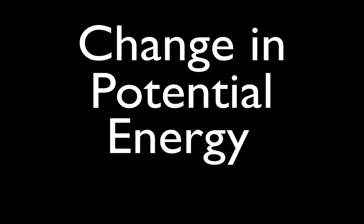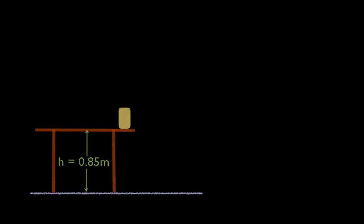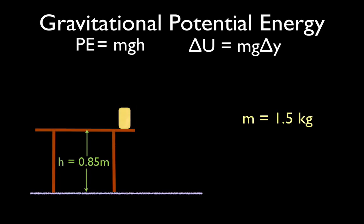In today's video we're going to calculate not just the potential energy, but the change in the potential energy, and we're going to be talking about gravitational potential energy. When you calculate potential energy, what you're really calculating is the change in an object's gravitational potential energy from one location to another. You have to reference the change in the potential energy from a starting point.